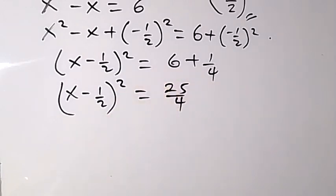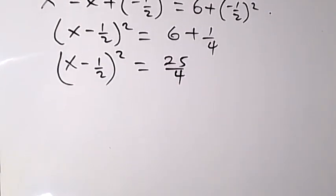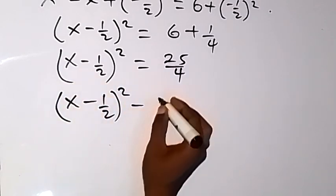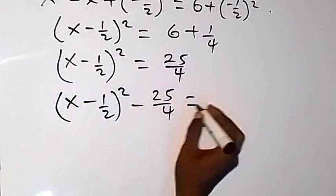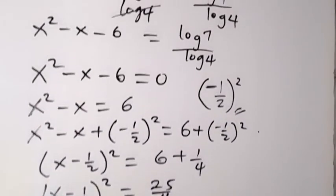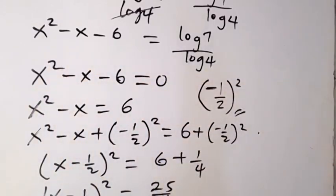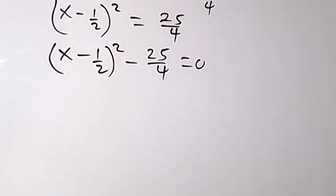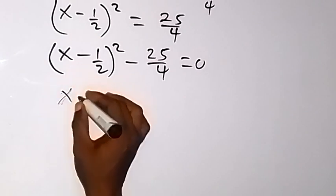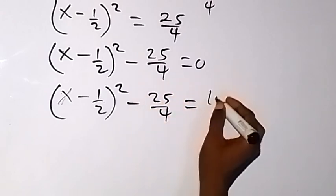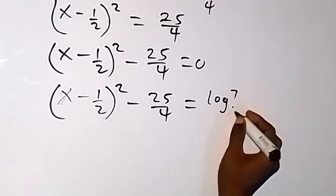We write this as x minus one half squared equals 25 over 4. Bringing 25 over 4 back to this side gives x minus one half squared minus 25 over 4 equals 0. So instead of the original x squared minus x minus 6, we can write x minus one half squared minus 25 over 4. We now have x minus one half squared minus 25 over 4 equals log 7 over log 4.